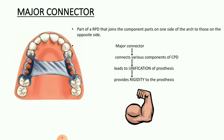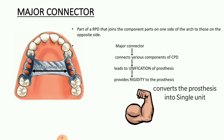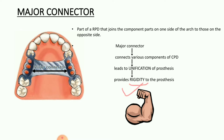Moving on to the major connector. This is the most rigid component of the prosthesis. The major connector is that part of an RPD that joins the components and parts on one side of the arch to those on the opposite side — that is, the components present on the right as well as the left side are connected with the help of the major connector. By connecting the various components, the major connector leads to the unification of the prosthesis, connecting all components into a single unit and providing rigidity to the prosthesis.